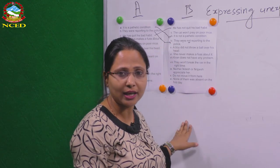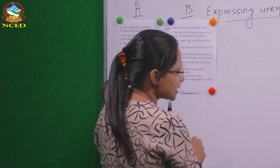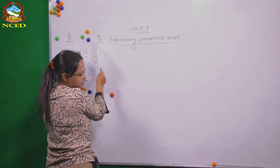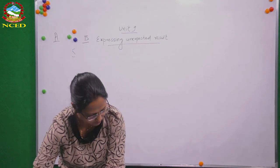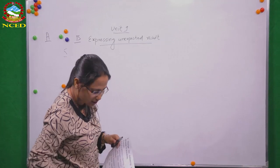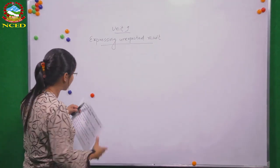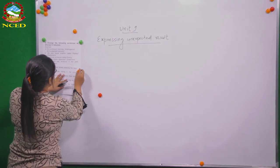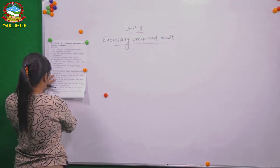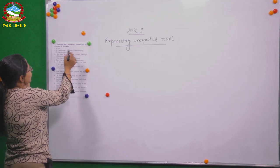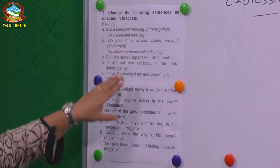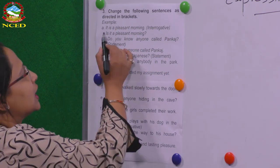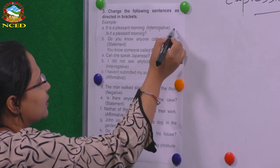Ask your teacher if you need any help. Let's move on to number three on the same page. It is again an exercise related to transformation. Change the following sentences as directed in brackets. An example is given: 'It is a pleasant morning' — change to negative interrogative: 'Is it a pleasant morning?' We will do a few together and you will do the rest yourself.